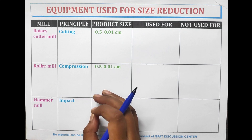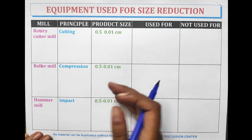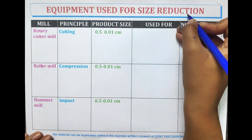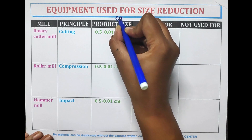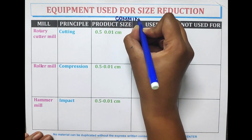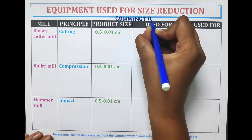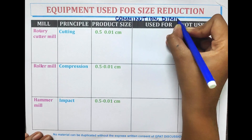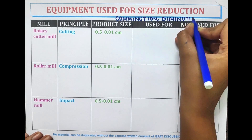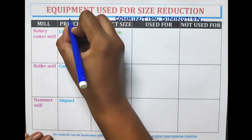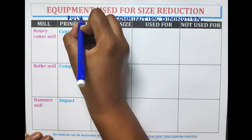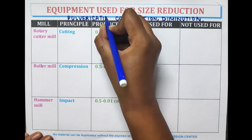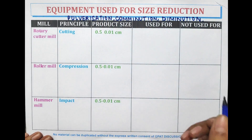Size reduction is also known as comminution, diminution, or pulverization. These are some other terms for size reduction.